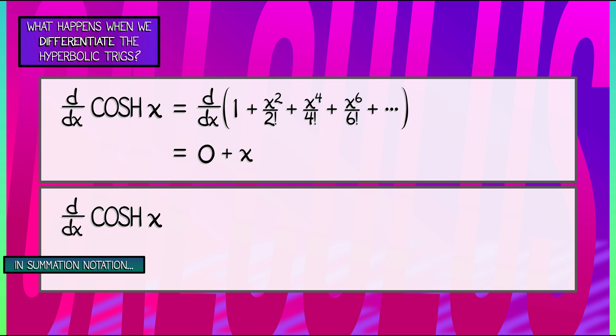Then, oh, I see how this is going to work. I'm going to get x cubed over 3 factorial. Then x to the 5th over 5 factorial. Everything is great. This is going to give me the series for sinh.